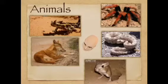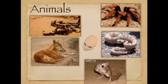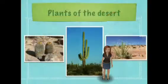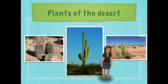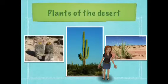Tarantulas, which are not venomous, chomp on mice and other unlucky animals. Kangaroo rats eat seeds, leaves, stems, and insects. My name is Mary, and these are the plants: saguaro cactus, ocotillo, and barrel cactus. These are plants found in the desert.